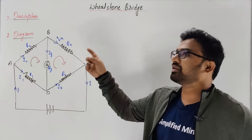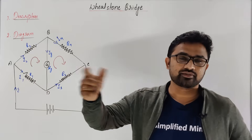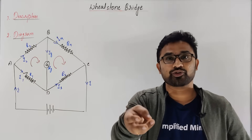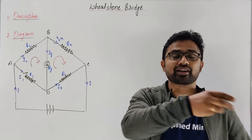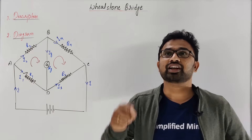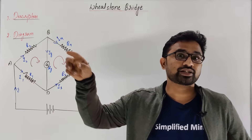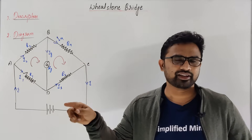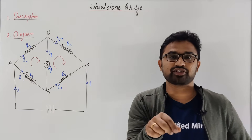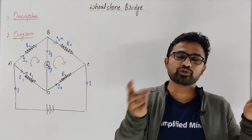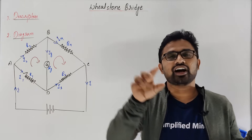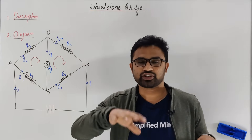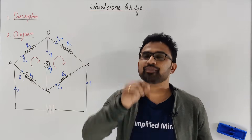Also, in this chapter, previously, some derivations like drift velocity are very important questions. I will also ask you to prove that sigma equals n·e²·τ/m. I already have made those derivations — links in the description of course, you can go and check those videos.